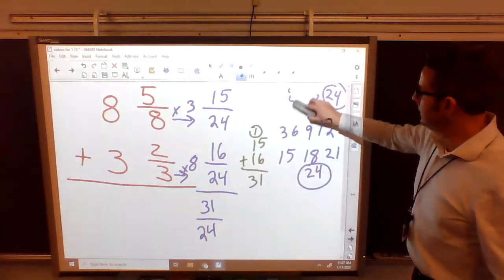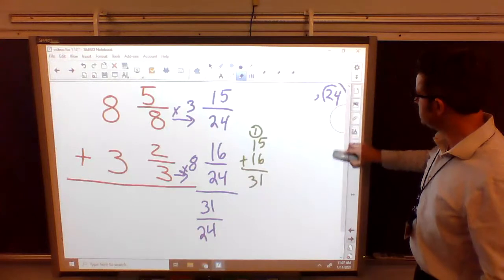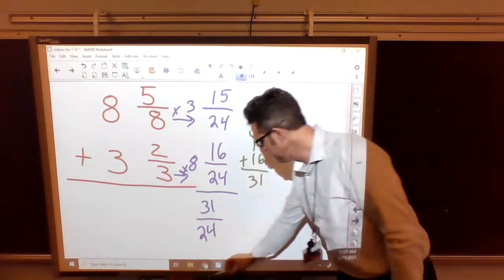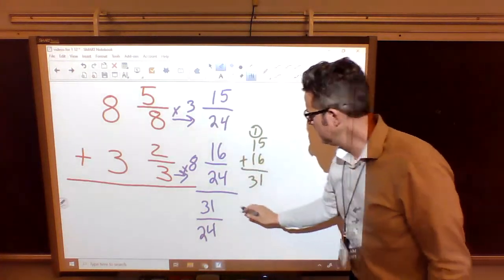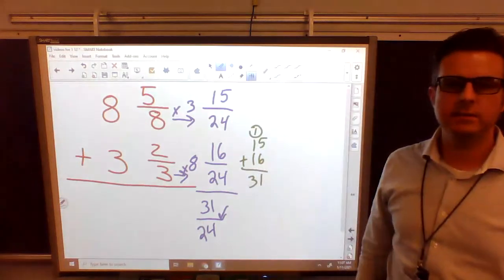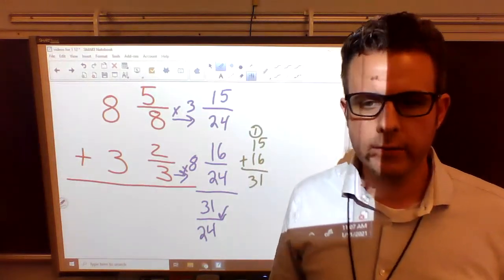Now, because I'm out of room, I'm going to erase this part here. Again, this fraction line means divided by. It is 31 divided by 24.